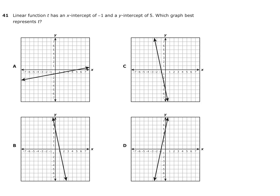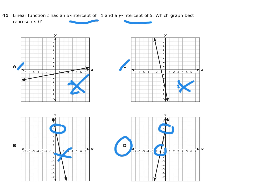Number 41: Which linear function has an x-intercept of negative 1 and a y-intercept of 5? We're looking for one that crosses the y-axis at 5 — that's this one and this one. But we also need an x-intercept of negative 1. This one is negative 1; this one is positive 1. So by process of elimination, the answer has to be D. I ruled out A and C because those did not have a y-intercept of 5.